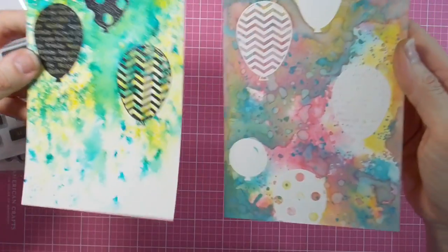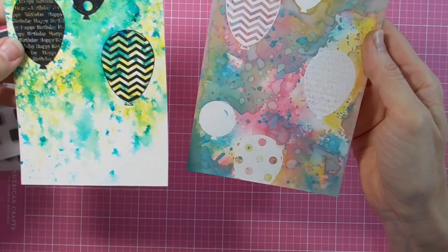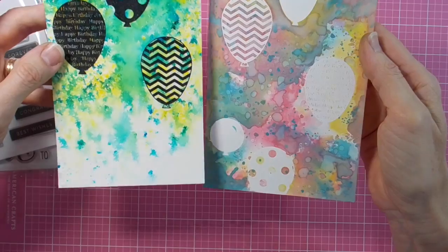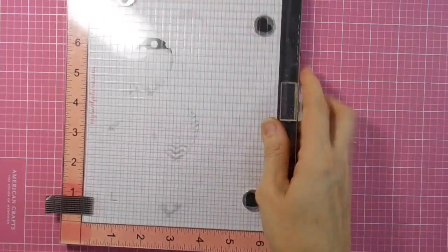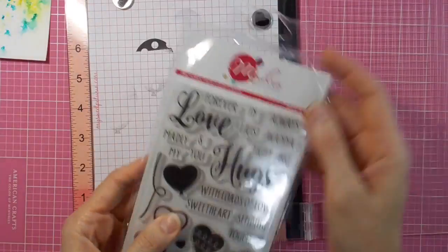Here you can see my two pieces—the Brush-o'd piece and the Distress Oxide piece—all ready to add to my cards. So the Brush-o'd piece first.